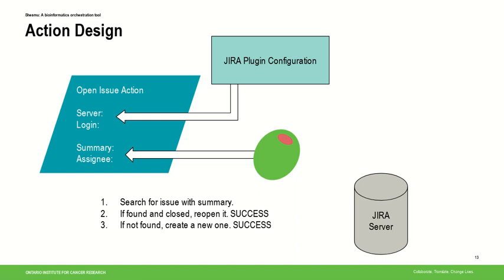Shasmut actions don't remember anything in and of themselves. Every time you restart a Shasmut server it's a blank slate that has to figure itself out again. So actions are less 'do this' and more 'figure out if this is done.' In the case of a Jira action, that means going to Jira and searching — if you find an open ticket, you're good; if you don't, you need to create one, rather than simply opening a ticket every time you're executed.